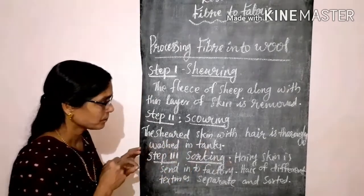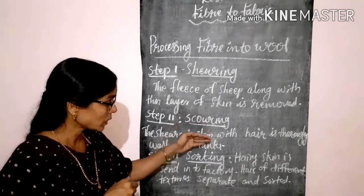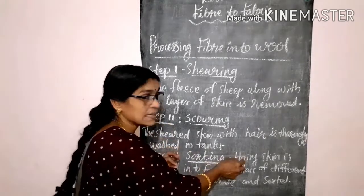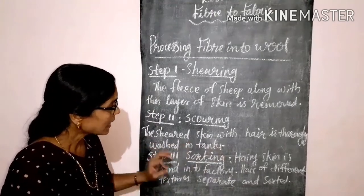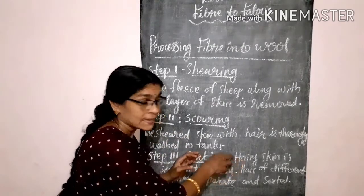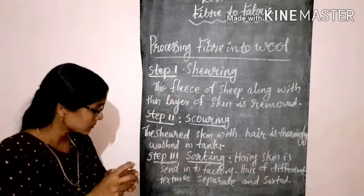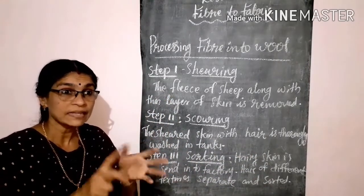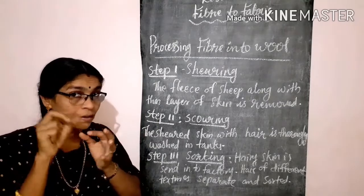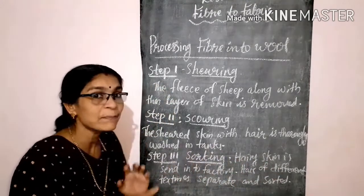After scouring, the hairy skin is sent into factories. The hair — which are still connected to the skin — come in different varieties and different textures. While examining the hair, we can understand the different varieties and different kinds: some are rough to the touch, some are very soft. These hairs of different textures are separated in the process called sorting.